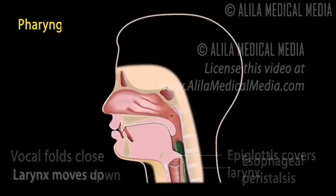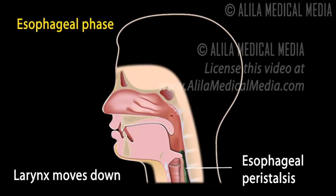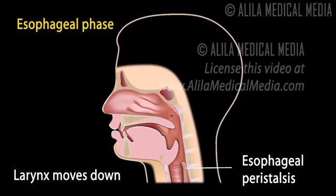In the esophageal phase, the food bolus is propelled down the esophagus by peristalsis, a wave of muscular contraction that pushes the bolus ahead of it. The larynx then moves back down to its original position.